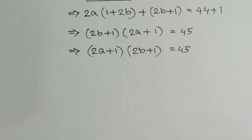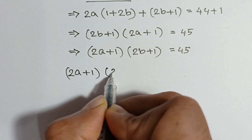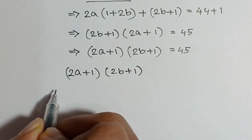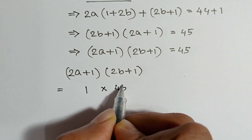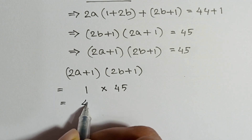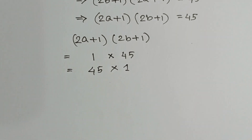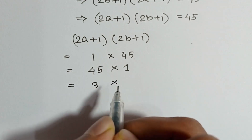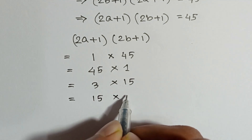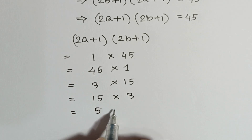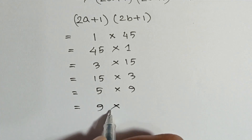Now, we can write (2a + 1)(2b + 1) = 45, and 45 can be written as 1 × 45, or 45 × 1, or 3 × 15, or 15 × 3, or 5 × 9, or 9 × 5.